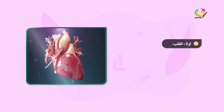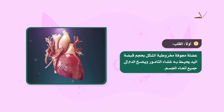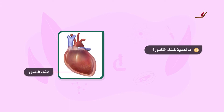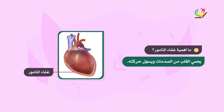ولنبدأ بالقلب. انظر إلى الصورة ولاحظ شكل وحجم القلب. إن القلب عبارة عن عضلة مجوفة مخروطية الشكل بحجم قبضة اليد، يحيط به غشاء التامور. إن وجود غشاء التامور يحمي القلب من الصدمات ويسهل حركته.